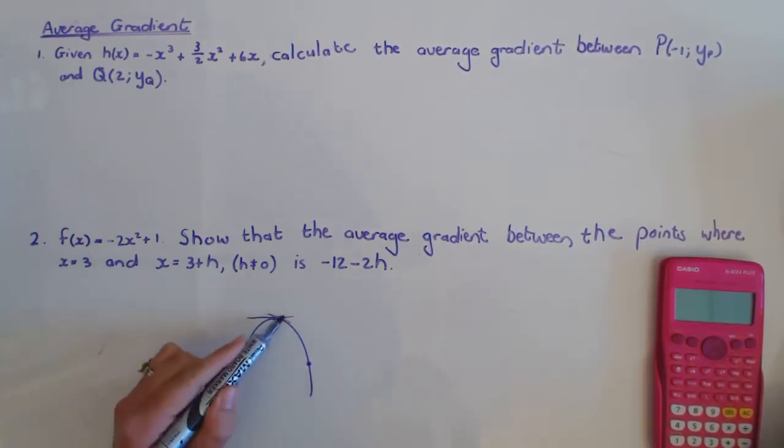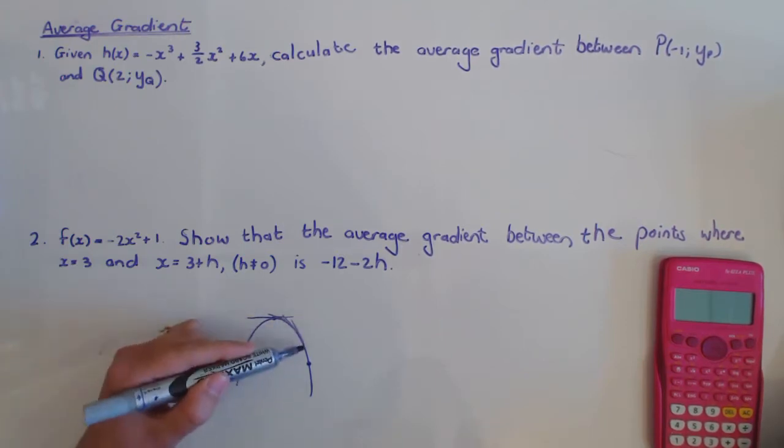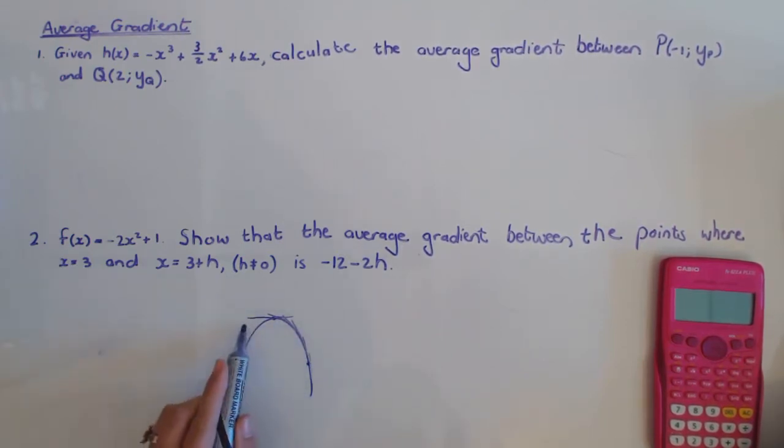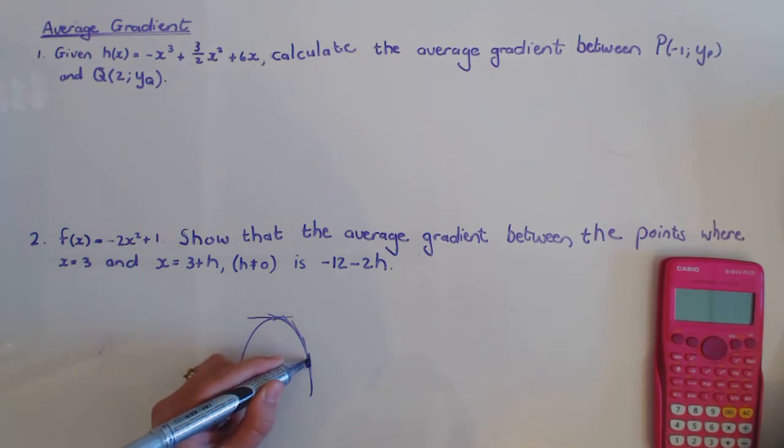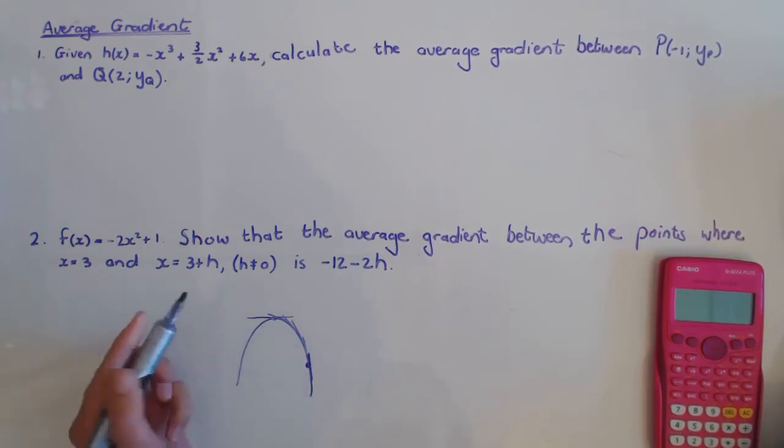Now if I look at the various gradients along the curve, you can see that it's changing. The gradients of the tangents to the curve will be changing the whole time and if I want to find the average gradient, in effect what you are doing.